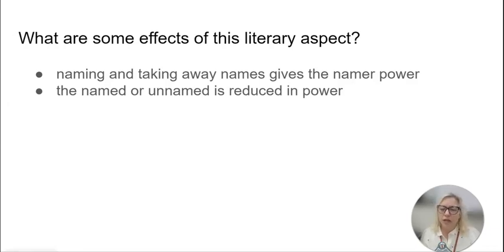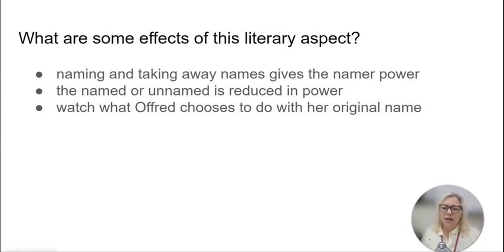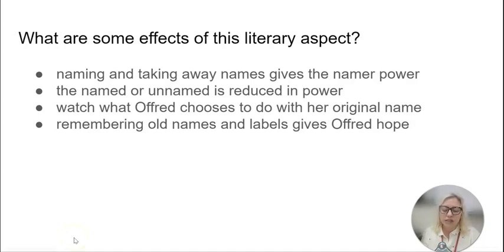Watch what Offred chooses to do with her original name. We're never going to see June referenced, but she is going to bring up her original name — so watch that and watch what she says about it, and think about how that choice gives Offred power in itself. Also, remembering old names and labels oftentimes gives Offred hope that she can return to a more humane, freer existence. If she can at least remember the simple names for things that no longer exist in Gilead, this connection to the past gives her hope or at least an ability to continue moving forward.